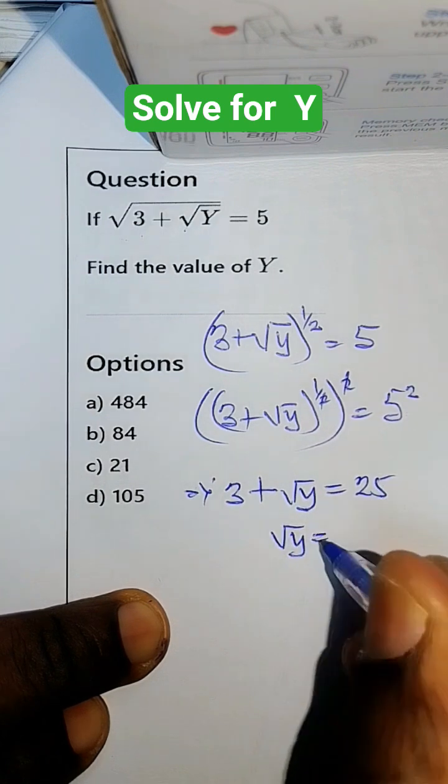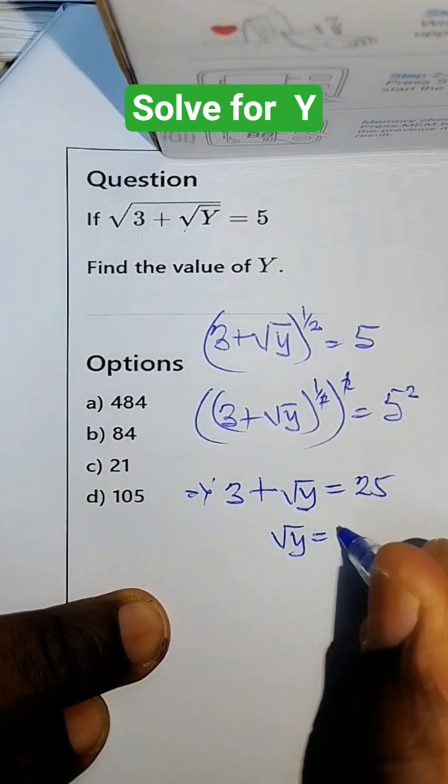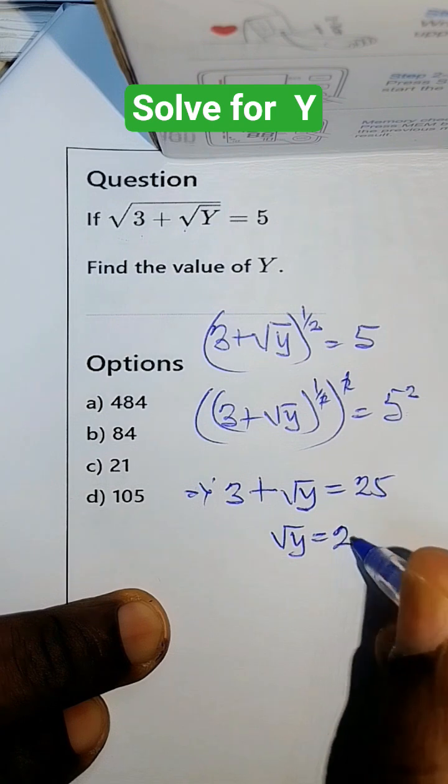Root y equals, subtract 3 from both sides, we have 22.